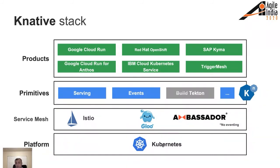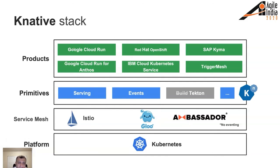The Knative stack consists of the underlying Kubernetes platform, on top of which sits the service mesh — Istio is the default, though you can swap it with Gloo or Ambassador. Then you have the primitives: serving and eventing, with Tekton separately. On top of that are several commercial and open source products: Red Hat provides OpenShift, IBM has Cloud Kubernetes, and Google has Cloud Run and Cloud Run for Anthos. Today's talk covers Kubernetes, Knative serving/eventing, and Cloud Run — feel free to explore competing products as well.